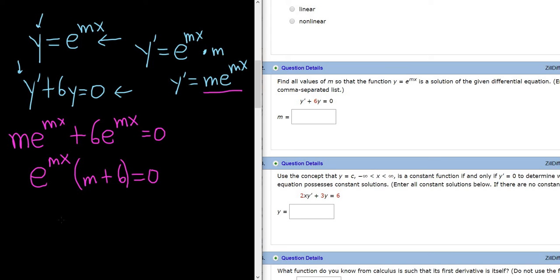You can actually divide by e to the mx now. e to the mx can never be 0. If you think about it, it's going to look like this if m is positive, and so it will always be above the line y equals 0. If m is negative, it will look like this, and it will also always be above the line y equals 0. So e to the mx is never 0.